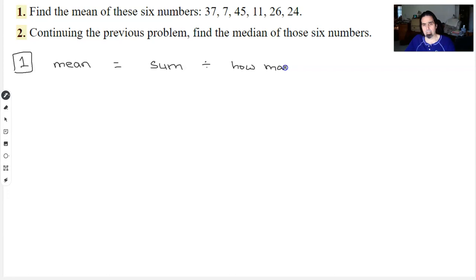So in this case we have those six numbers. We add them all up. What do we get? 37 plus 7 plus 45 plus 11 plus 26 plus 24. 150. There were six of them. So we get to 25.